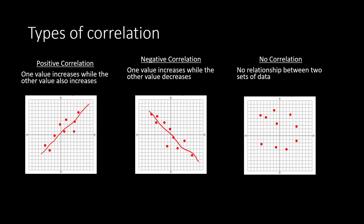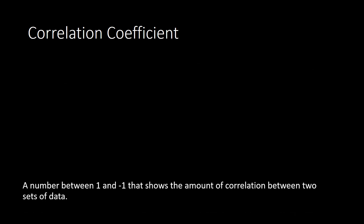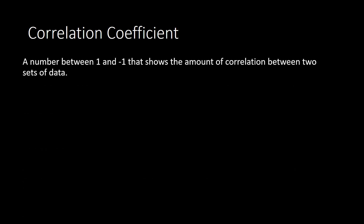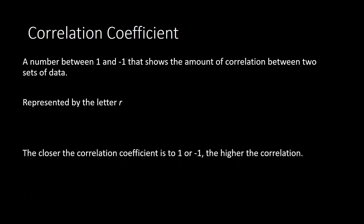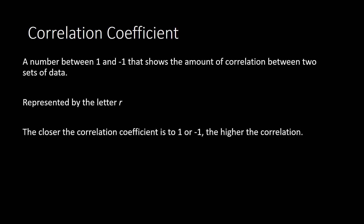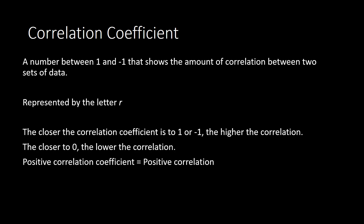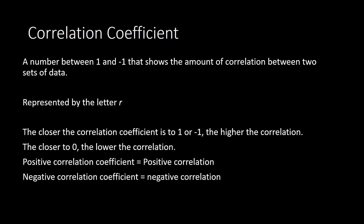With correlation, we have what is called a correlation coefficient — it's a number between 1 and negative 1 that shows the amount of correlation between two sets of data. We represent it by the letter r. The closer the coefficient is to 1 or negative 1, the higher the correlation. The closer it is to 0, the lower the correlation, where 0 would be no correlation. A positive coefficient means positive correlation; a negative coefficient means negative correlation.